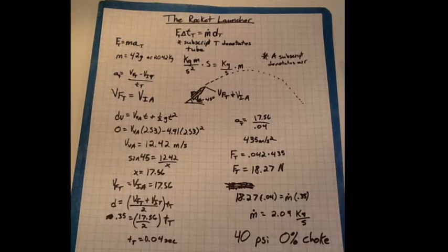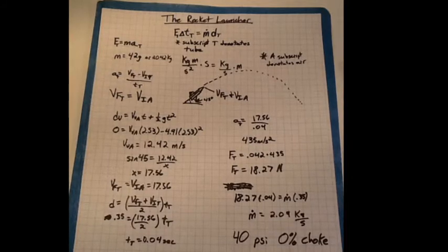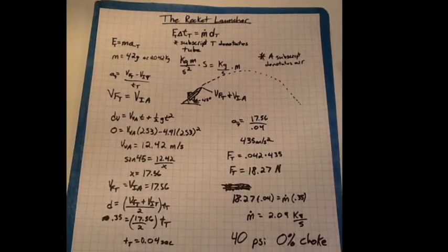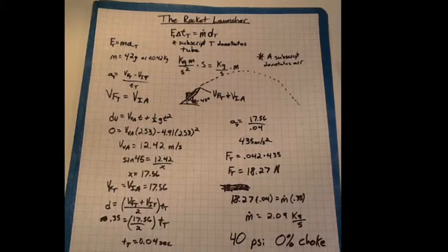By finding the acceleration, we are able to find the magnitude of the force acting. These numbers are then used to find the mass flow rate, which is 2.09 kg/s under 0% choke and 40 PSI.